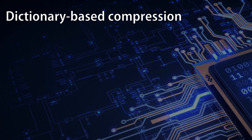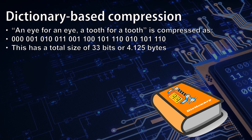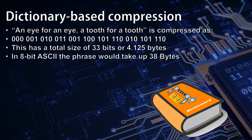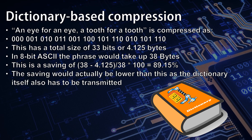Counting up the bits in our compressed representation of 'an eye for an eye, a tooth for a tooth', we find that it's got 33 bits, or 4.125 bytes. In 8-bit ASCII, the phrase has 38 characters and so would take up 38 bytes. This is a saving of around 89.15%. However, this is not the full saving you get with dictionary-based compression — the saving would actually be lower because the dictionary itself also has to be transmitted alongside the message.